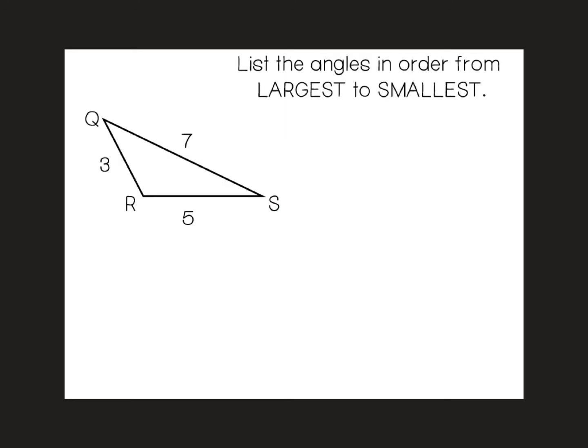So in our first example, it asks us to list the angles in order from largest to smallest. How we want to start this is we want to look at our largest side, which is 7. Our largest side is going to be opposite our largest angle, so we would list R first.